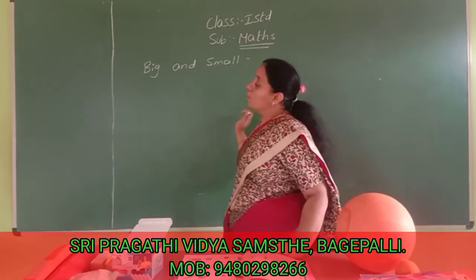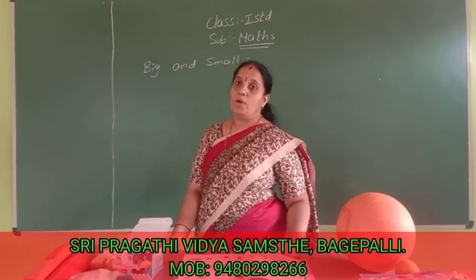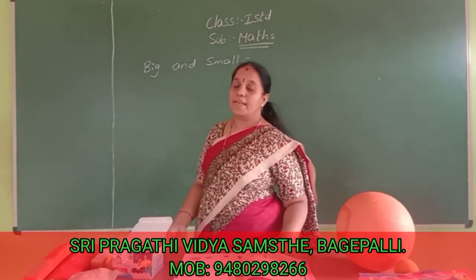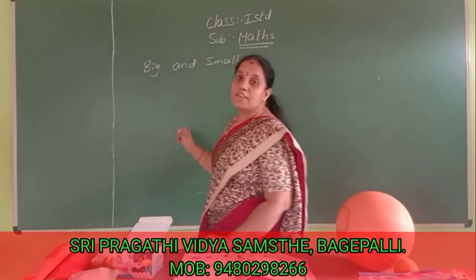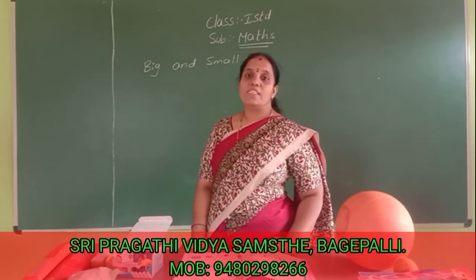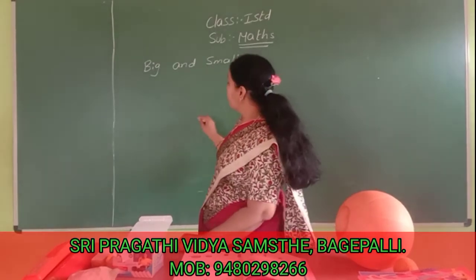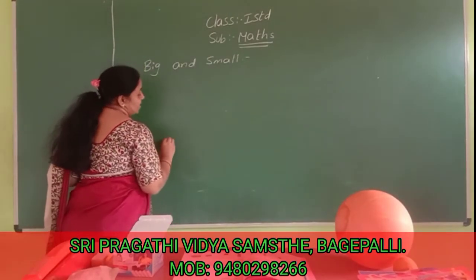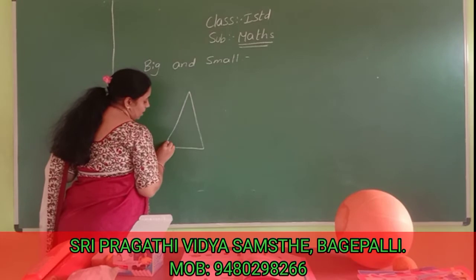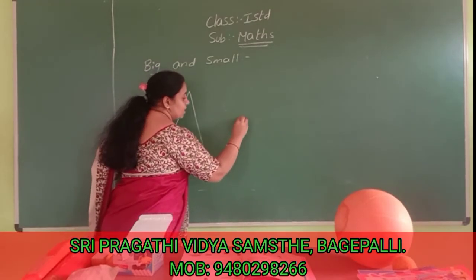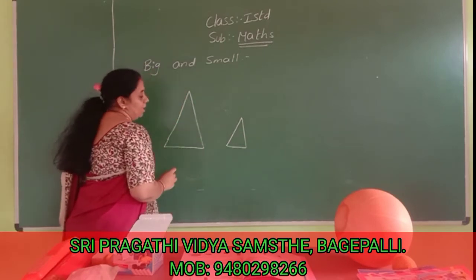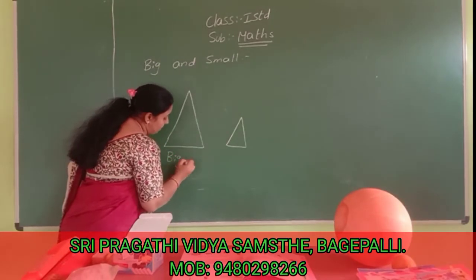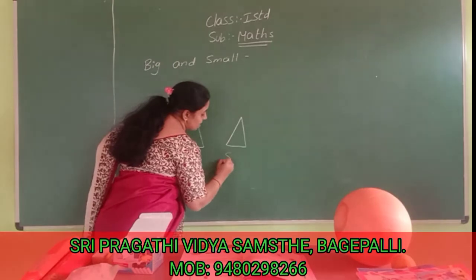First of all, you learned in LKG and UKG. In UKG you learned big and small. Here, see — what is the difference between big and small? Now I will draw the big shape. It will be one triangle shape. See here — what is this one? This is a triangle. This one also is a triangle. This one is big. What will you say this one? This one is small.